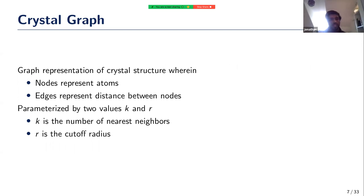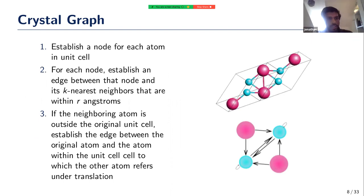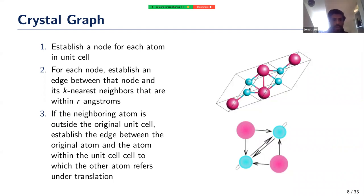What is a crystal graph? It's a graph where nodes represent atoms and edges represent the Euclidean distance between atoms, parameterized by two values: k, the number of nearest neighbors for which to establish an edge, and r, the cutoff radius. To create a crystal graph, the first step is to establish a node for each atom within the unit cell. Taking lutetium silicon as a simple example, the unit cell has four atoms — two silicon and two lutetium — so the crystal graph has four nodes. For each node we find the k nearest neighbors; with k equals two, if a neighbor is within cutoff radius r, we establish an edge between the two nodes.